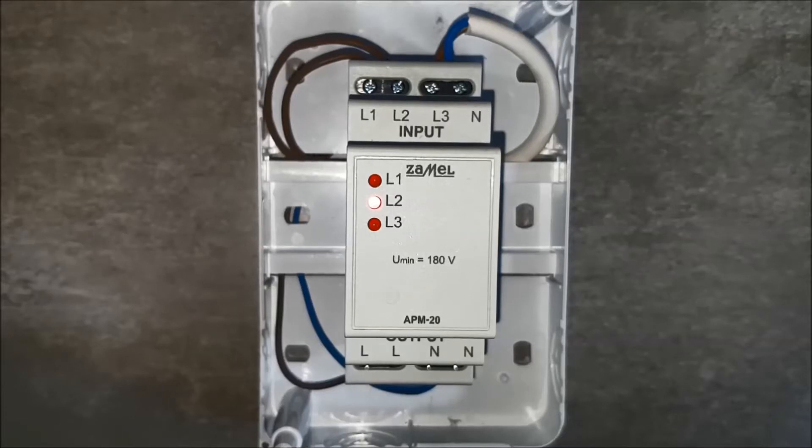In this case, the output voltage comes from the L2 phase. For the purpose of the film, the principle of operation is demonstrated by means of buttons that will cut the L1, L2, L3 phases and the receiver in the form of a lamp.